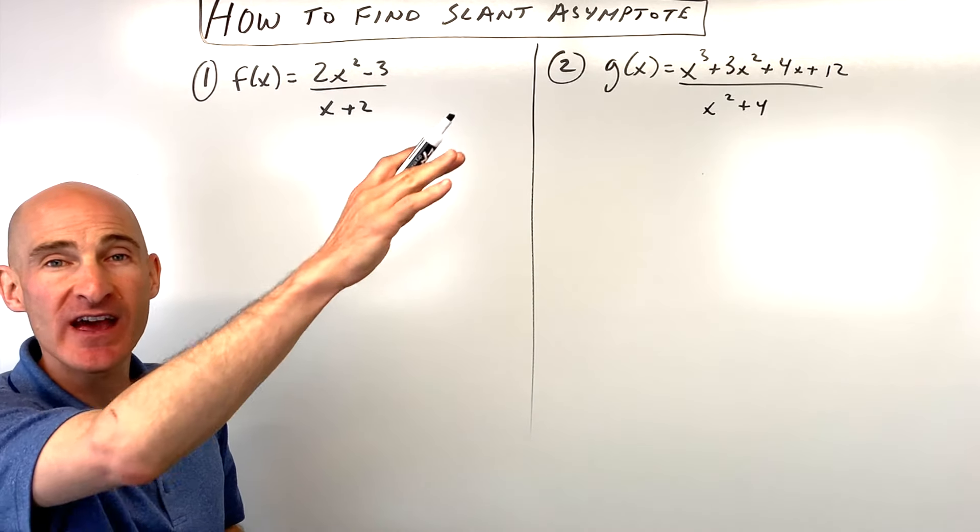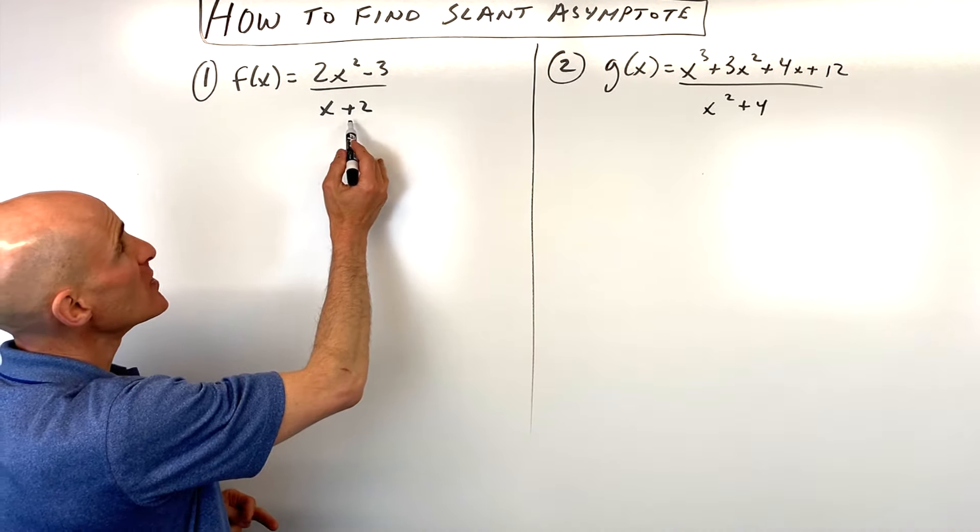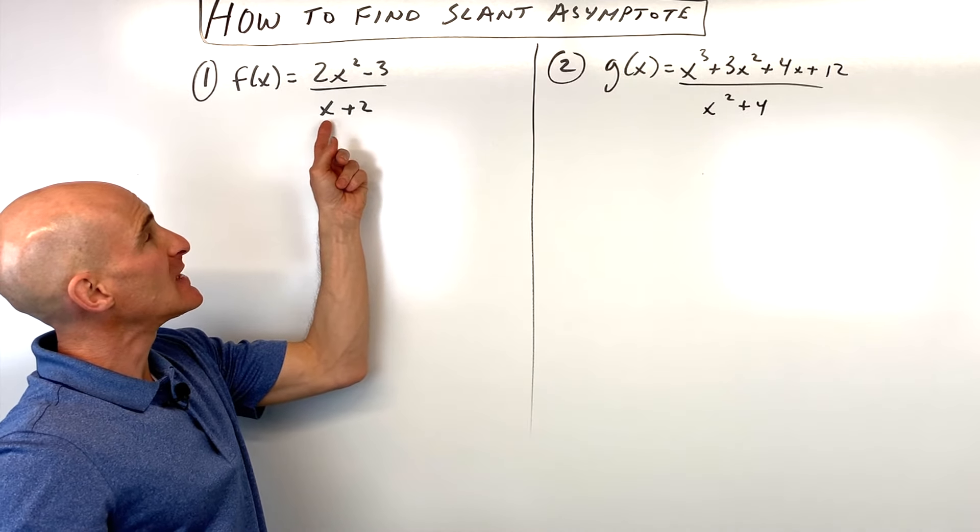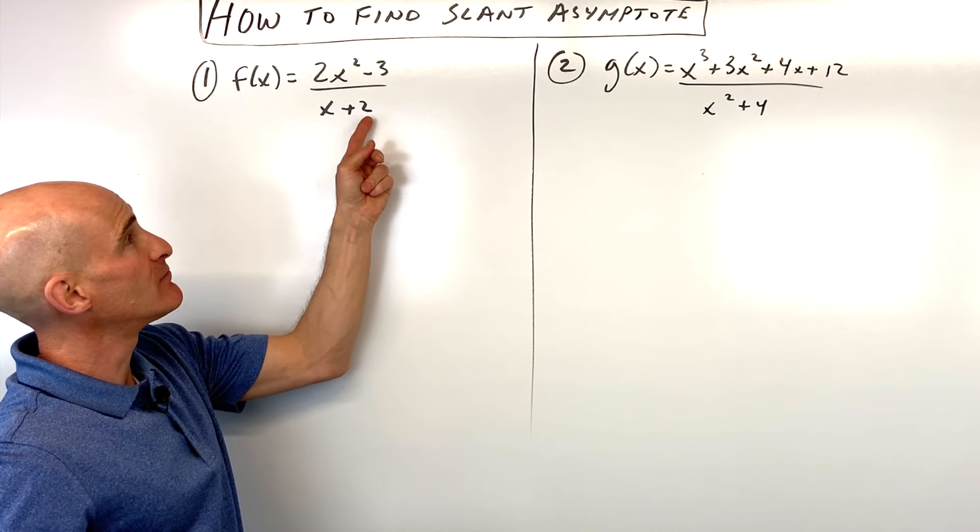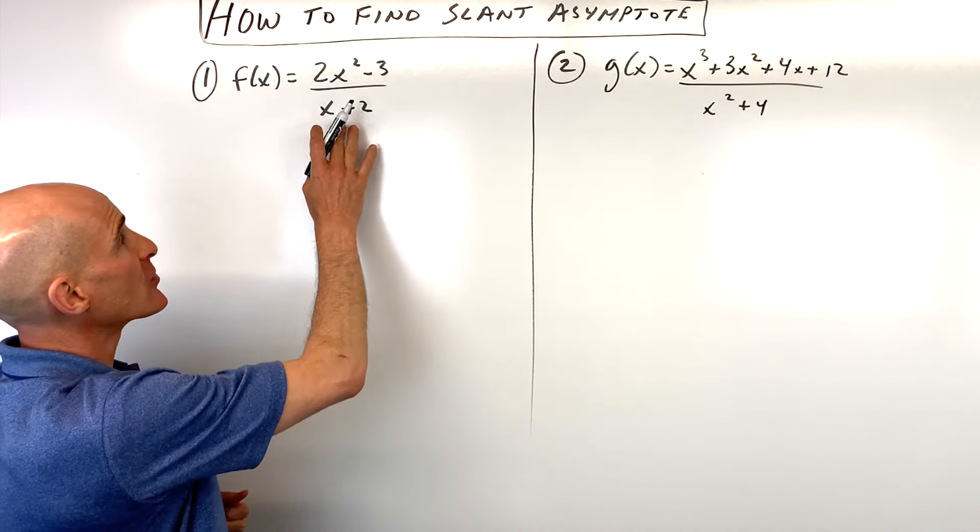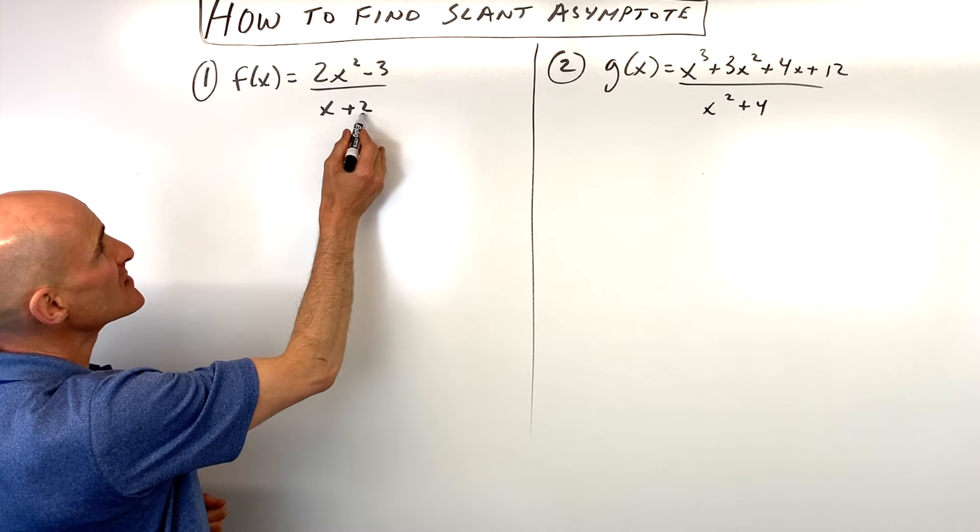But how do we find the equation of that slant asymptote? That's what we're going to do here. I'm going to show you two different methods. This first method, because this is a linear factor, see how it's like x plus something or x minus something? We can use synthetic division to find our slant asymptote. And the way you do that is if this is x plus 2, I'm going to put negative 2 here.